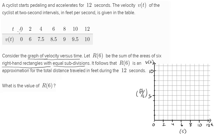Let's plot these points. At time 0, velocity is 0. Time 2, velocity is 6 feet per second. Time 4, it's 7.5 — gets us right there. Time 6, it's 8.5. Time 8, it's 9 feet per second. At 10 seconds, it's 9.5 feet per second. And at 12 seconds, it's 10 feet per second.